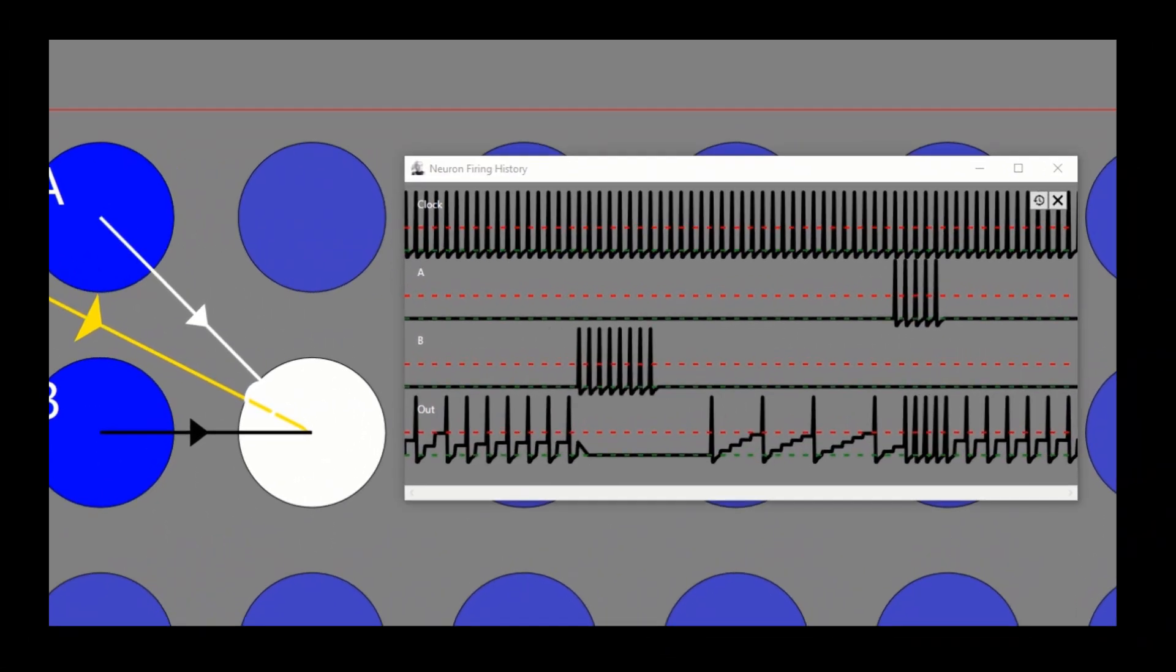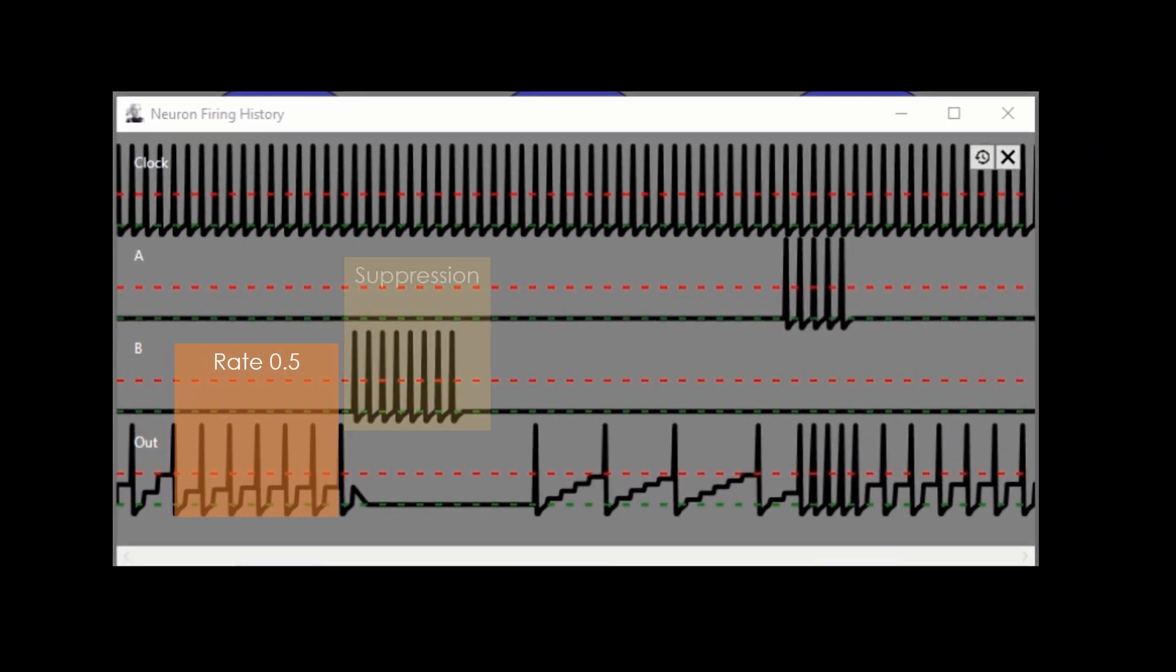To recap, if we fire B, we can see that the synapse weight is weakened. If we fire A, the synapse is strengthened. But we never know precisely what the weight of the synapse is.